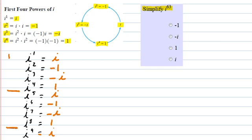So the pattern is 1, 2, 3, and 4. Now when you have a really large power of i you don't want to have to repeat this whole thing all the way up to 63. So what we can do is I'm going to show you an example with i to the ninth.